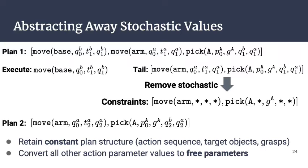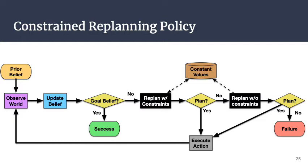Consider the following example. Suppose we find a plan involving moving the base, moving the arm, and picking object A (the green block). The robot executes move-base, and the rest of the plan tail is unused. We then take any value that is either an observation or derived from an observation and convert it into a free parameter (indicated by a wildcard symbol). What remains is the static structure of the plan — the names of entities and any constants such as a grasp — and we transform the problem to force the planner to adhere to this structure, preventing the earlier problem.